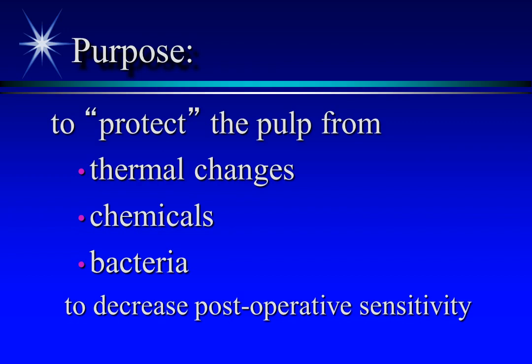Recall that dentin structure contains tubules, and the tubules contain a portion of the odontoblast. The odontoblast cell body is located at the periphery of the pulp, with the odontoblastic process extending into the dentinal tubule. So anything that contacts the dentin has a pathway or open access to the pulp.